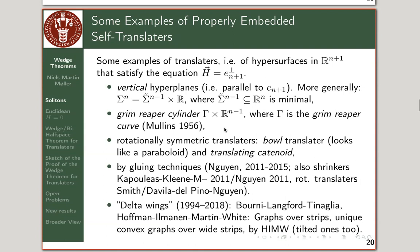There's another type of construction: classically you take the grim reaper curve — which appeared in the material science paper by Mullins in 1956 — and cross it with R^(n−1) to get an n-dimensional surface in R^(n+1). That's another product construction.